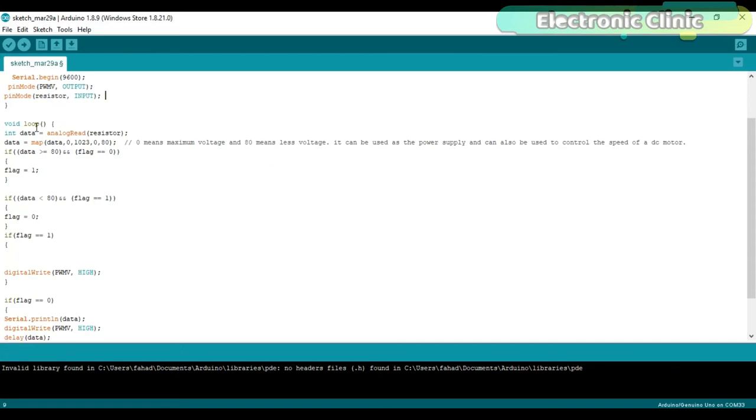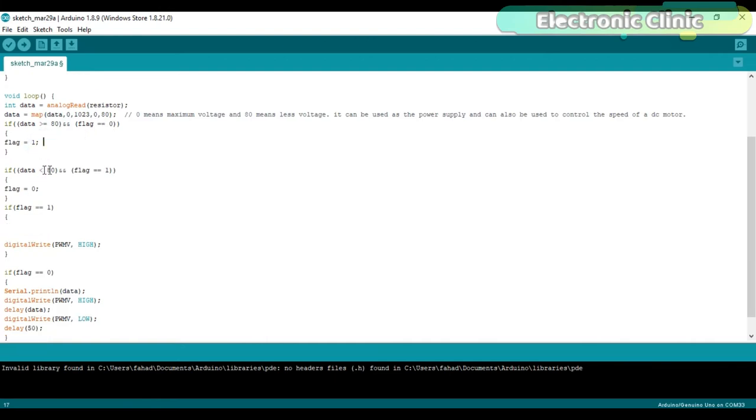Integer data equals analog read resistor. Simply reads the variable resistor and stores the value in variable data. Then using the map function, we limit the minimum and maximum value. After checking, I found that 0 to 80 are the best values. Then using the if conditions, we check the value of the variable resistor and then accordingly change the flag status. If the value is greater than or equal to 80, then change the flag status from 0 to 1. If the value is less than 80, then change the flag status back to 0.